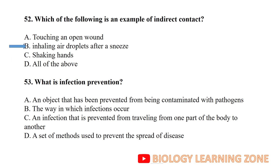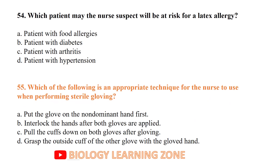Which of the following is an example of indirect contact transmission? Inhaling droplets after sneezing. What is infection prevention? A set of methods used to prevent the spread of disease.